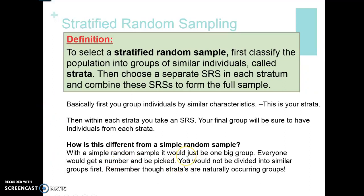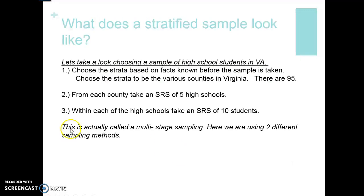How is this different from a simple random sample? With a simple random sample, instead of having 10 different bins or 10 different high schools, all of those high school students would be thrown into one giant bin — everyone gets a number and is picked, not divided into smaller groups. Just keep in mind that stratas are naturally occurring groups; you're not going to create a strata — they're already there. To choose a sample of high school students in Virginia, choose the strata based on facts known before the sample is taken — the various counties in Virginia. There are 95 naturally occurring counties, and from each county, we take a simple random sample of five high schools, then within each high school, 10 students.